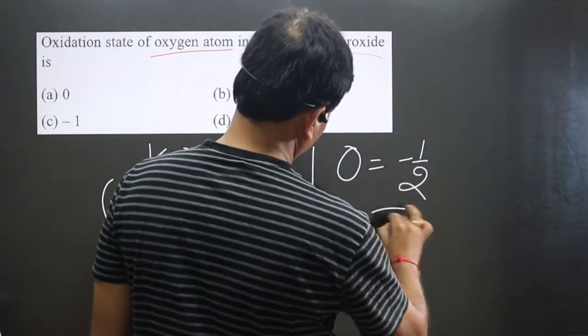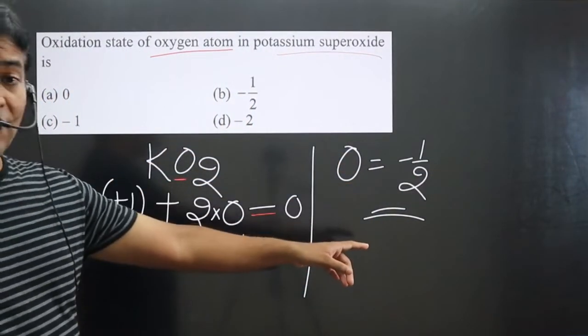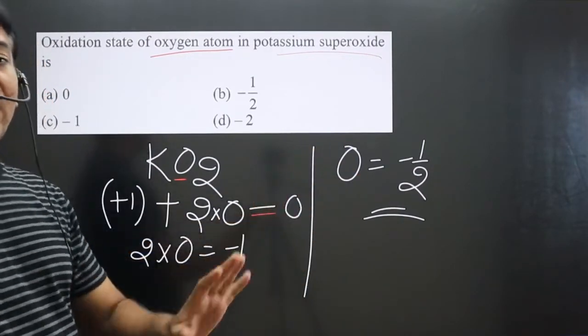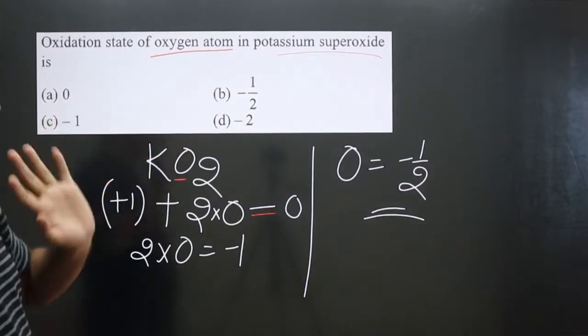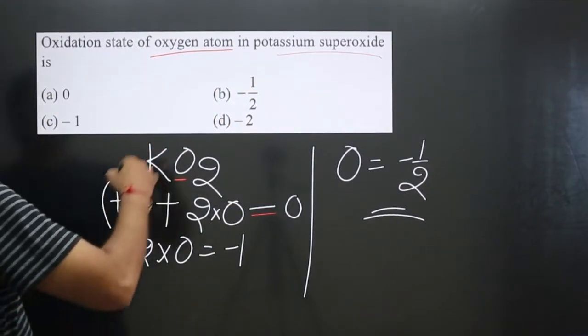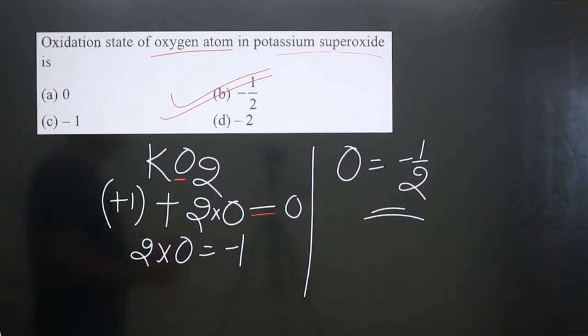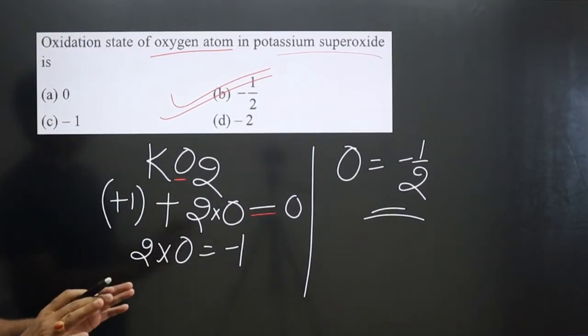So you can see this is a fractional value and it is a negative value. The fractional and negative value is the oxidation number of oxygen atom - minus half. We got option d. In superoxide, oxygen is present in minus half oxidation number.